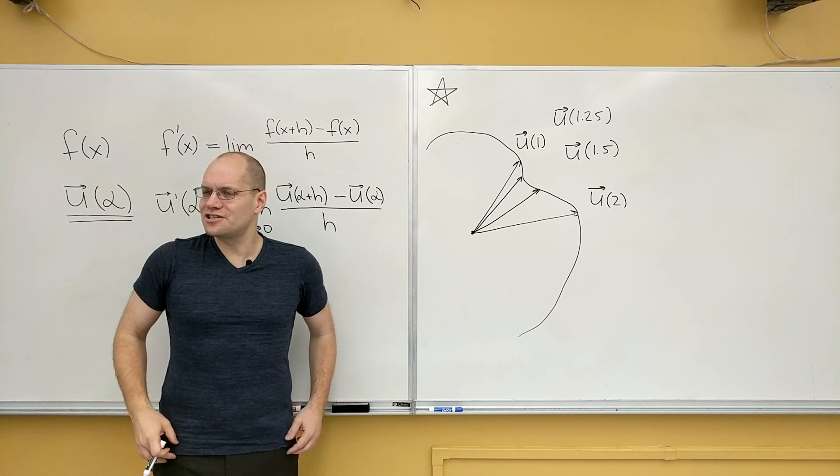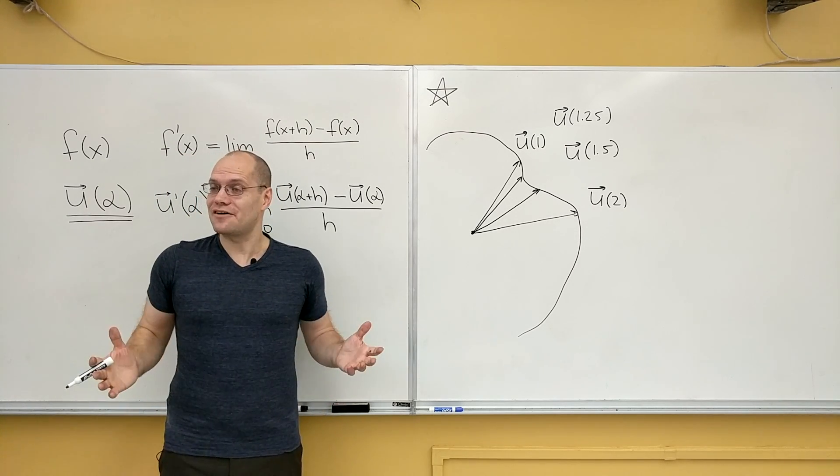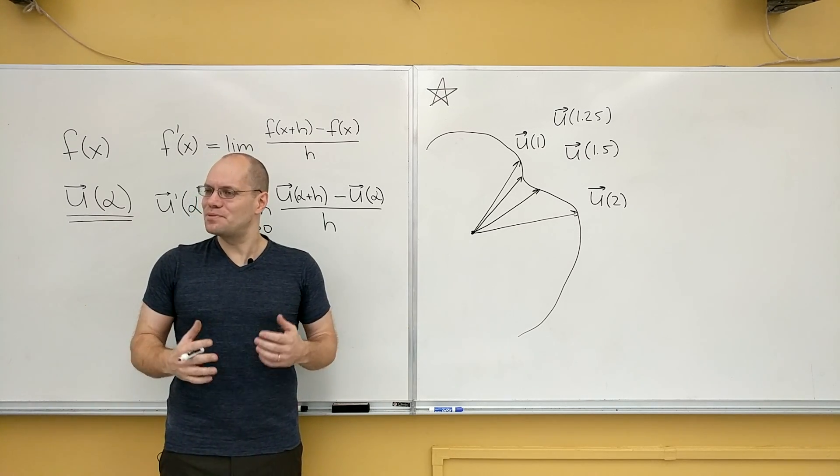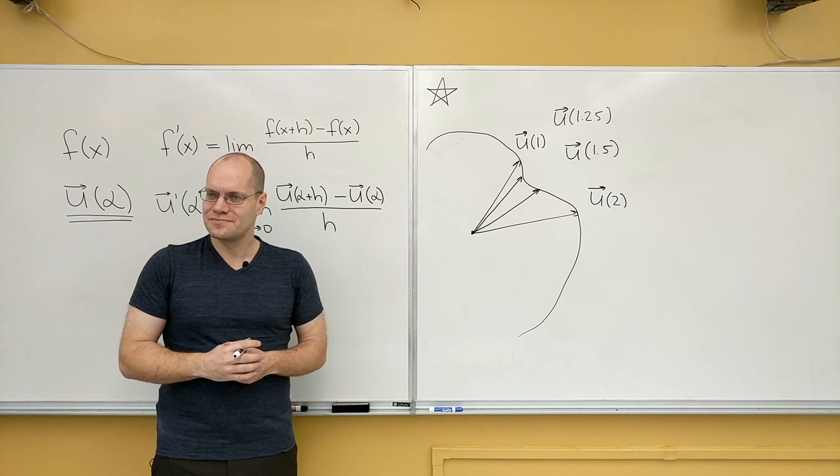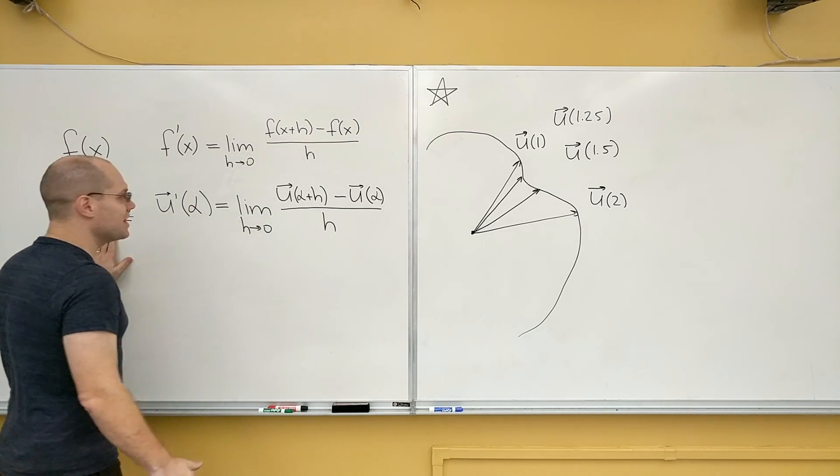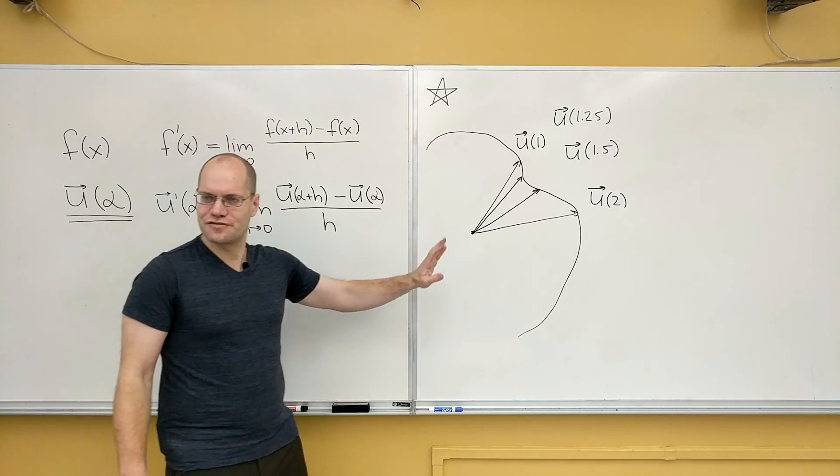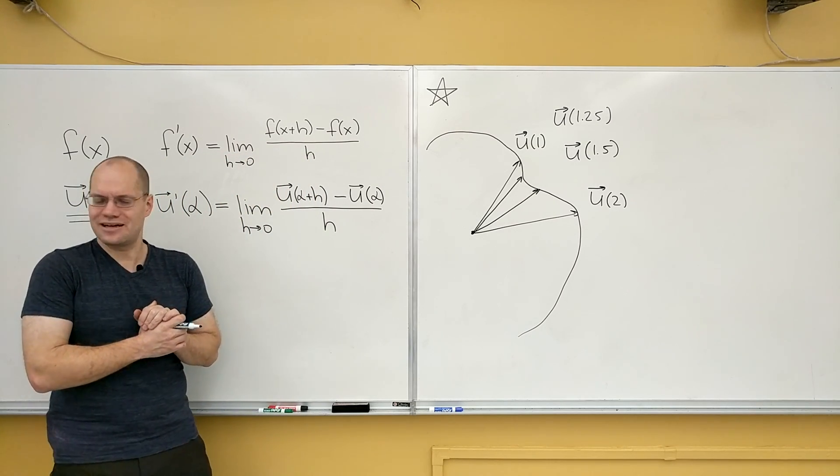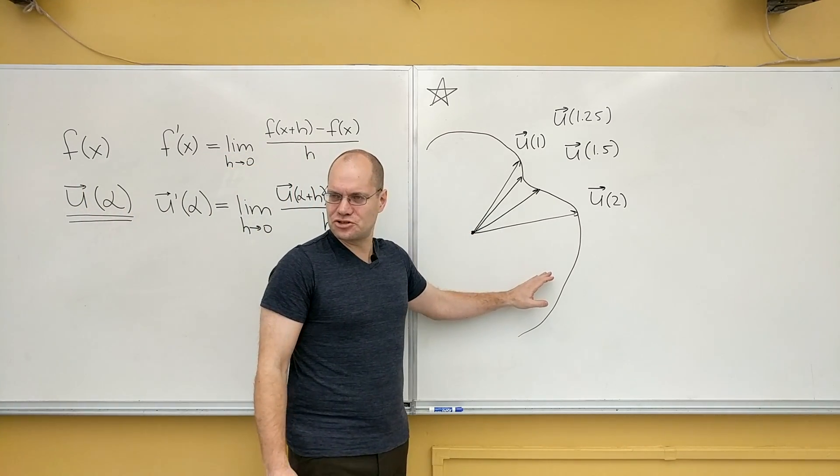Just like when we have a function, we can't really ignore its graph. We can't pretend that it doesn't exist, but it's a natural pairing. So when you have a vector-valued function, it is a curve. That geometric interpretation is right there. And after all, we're all about geometric interpretation.